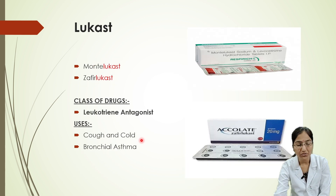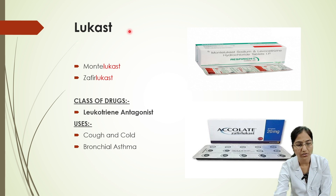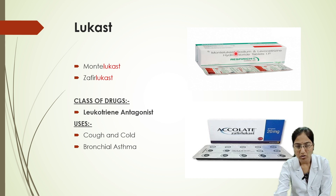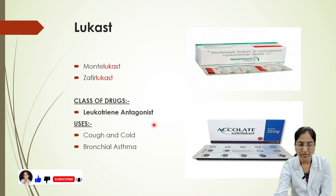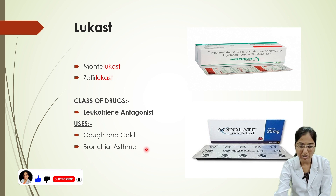Next, we'll look at drugs whose names end with '-lukast'. Examples include montelukast and zafirlukast — the words end with '-lukast'. This group belongs to the class of leukotriene antagonists, and their use is for bronchial asthma.